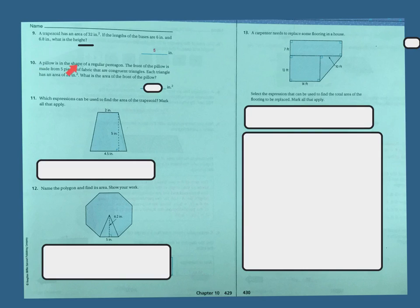Number 10. A pillow in the shape of a regular pentagon. The front of the pillow is made from 5 pieces of fabric that are congruent triangles. Each triangle has an area of 22 inches. What is the area of the front of the pillow? So they just drew that pentagon. We know that there are 5 pieces and each of them have 22, each of the triangles is 22. So 5 times 22 is 110.